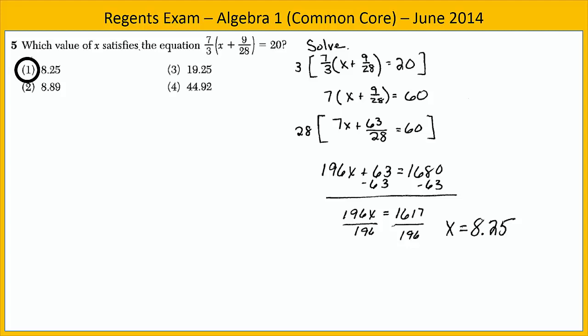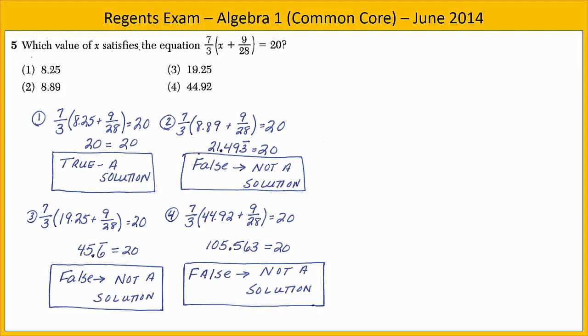But there are other ways we could go about solving this problem. We want to know which of these four values satisfies the equation, which value makes it true. We could take each of those values and substitute it into the equation and see which one resulted in a true number sentence. Notice when we substitute in 8.25 for choice one, we end up with 20 equals 20, which is a true sentence. That means that 8.25 is a solution to the equation. When we try choice two, 8.89, we end up with 21.493 repeating equals 20, which is clearly false. That indicates that 8.89 is not a solution. Choice three, 19.25, also causes a false statement, which means that that is not a solution. And the same is true with choice four, which gives a clearly false statement also. Once again, we see that 8.25 is the solution to the equation. And so choice one is our answer.